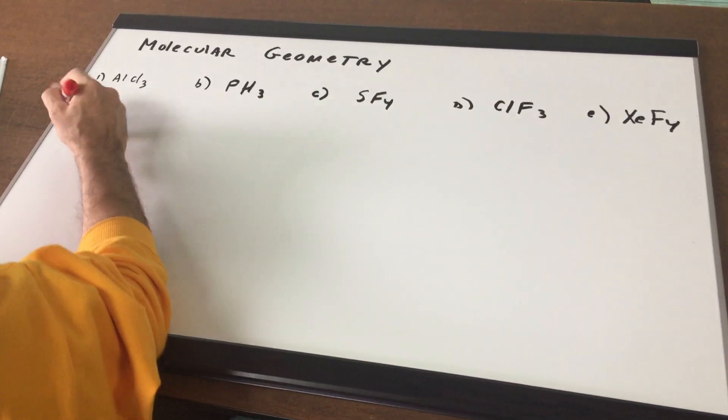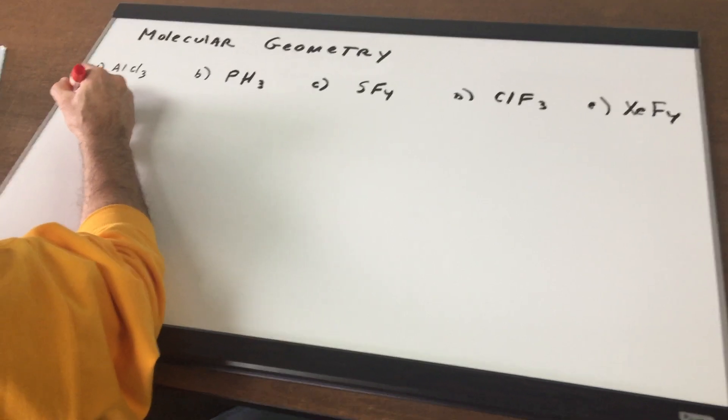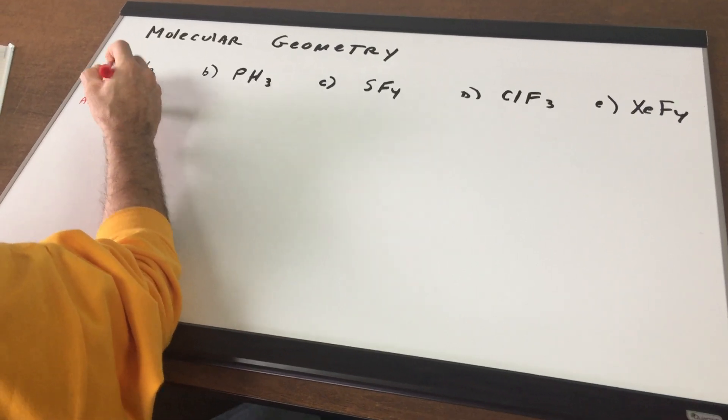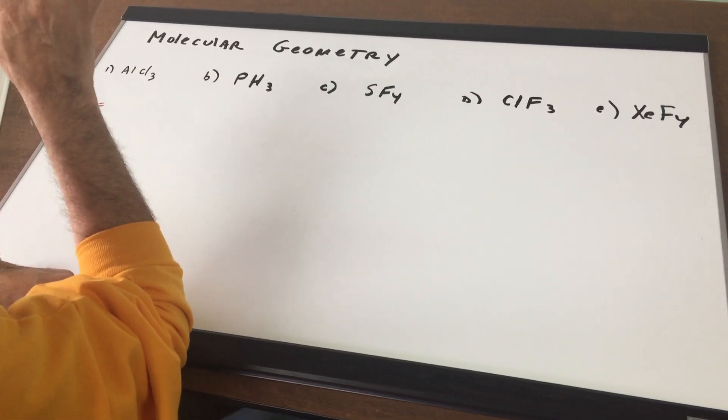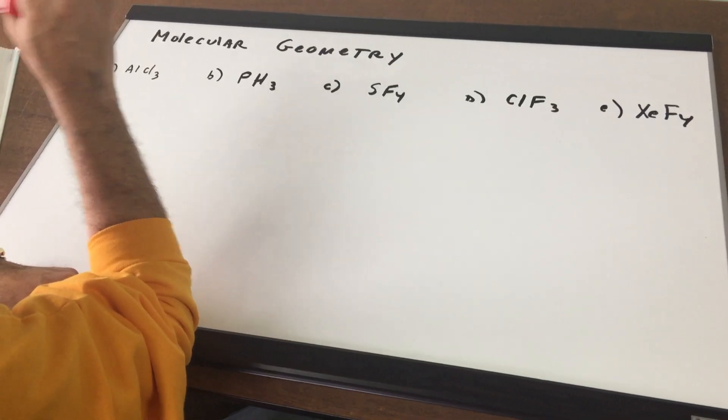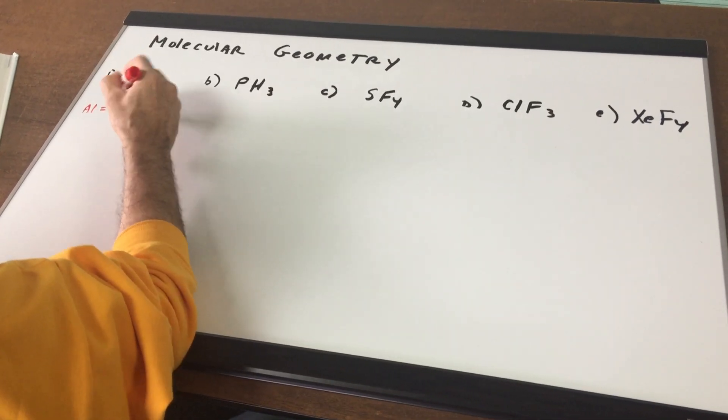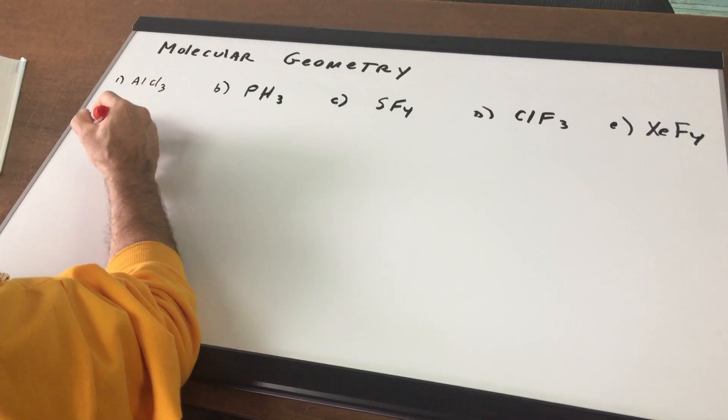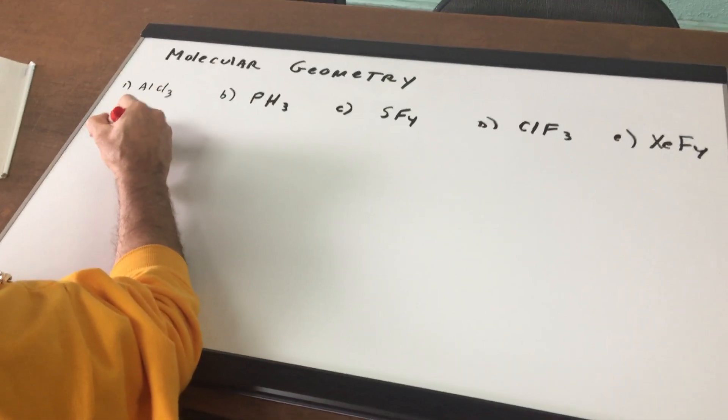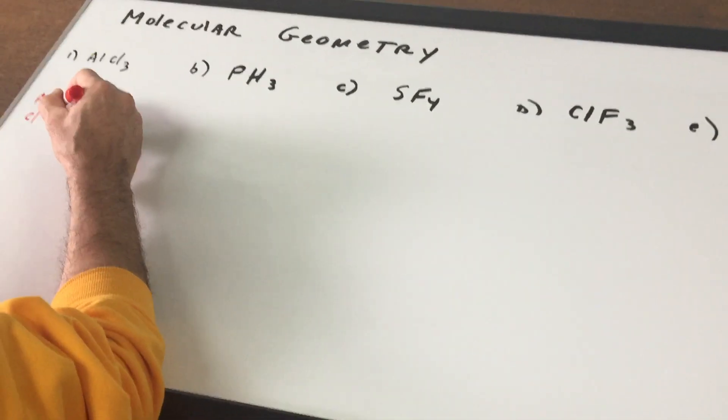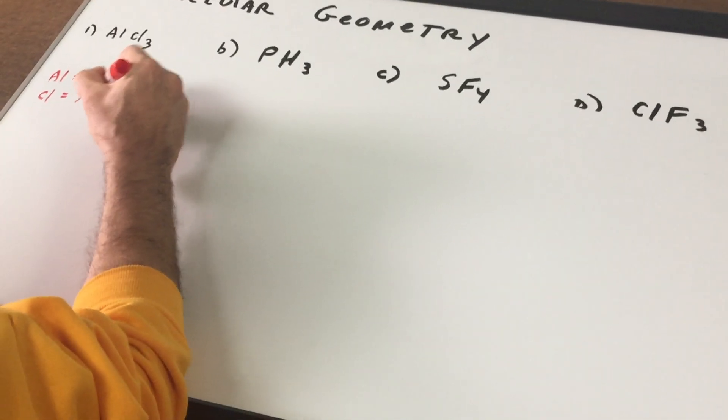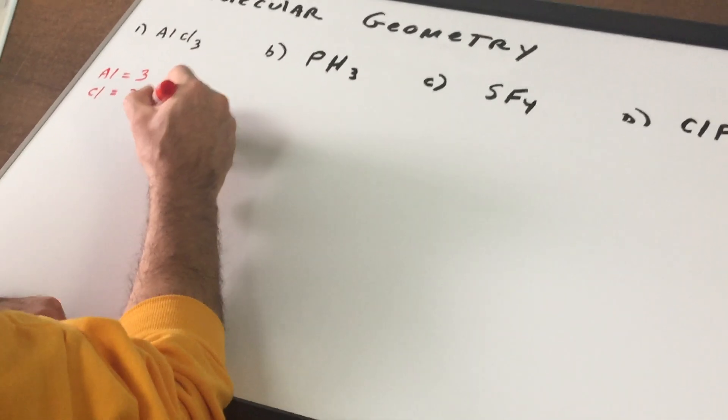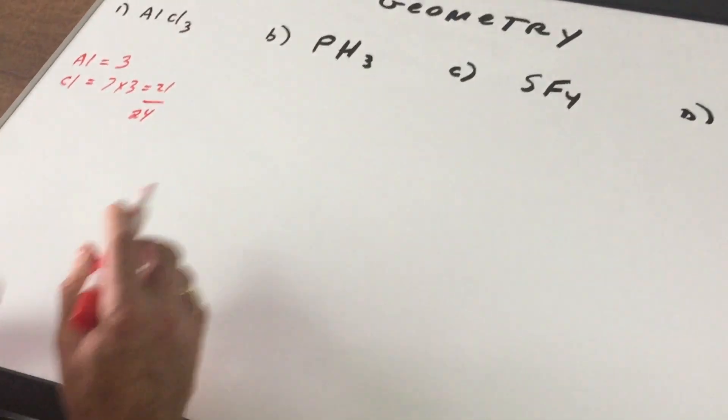Now what we're going to do is we note aluminum is in group 13. All you would do is forget the one in 13 and just think of that as group 3. So aluminum has three valence electrons. Chlorine which is in group 17, think of it as group 7 and there's three of them. That gives me 21. That gives me a total of 24 valence electrons.